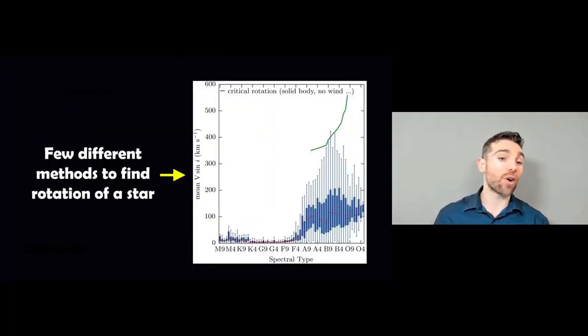It's worth noting that there are a few different methods we can use to determine the rotation of a star. Here is a plot of the spectral type along the bottom, which relates to its temperature and what their spectrum looks like. The y-axis is their rotation velocity, and you can see there's some dependence on temperature. We have a rotation of the star and we need a way to actually get that.